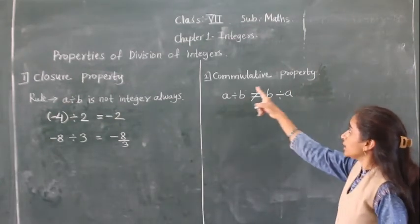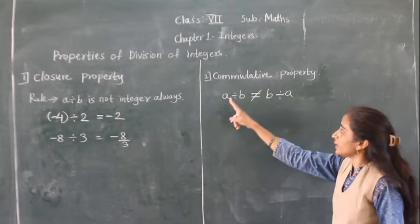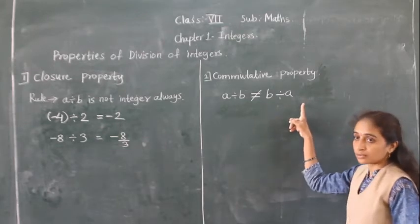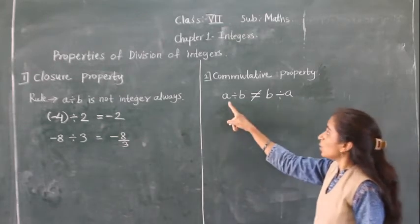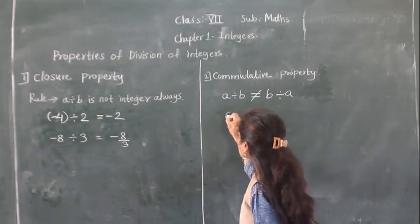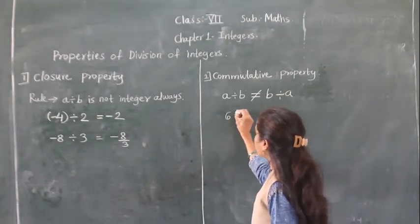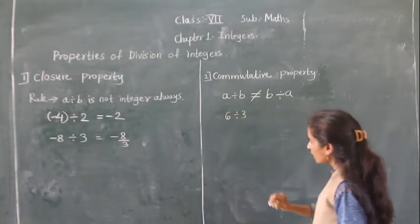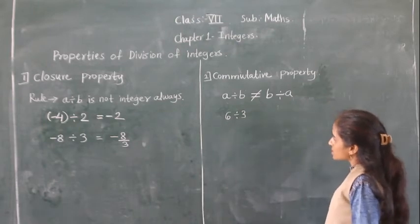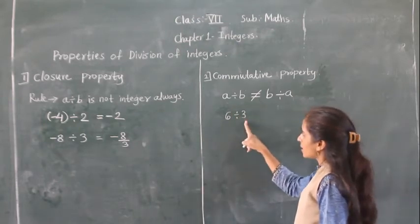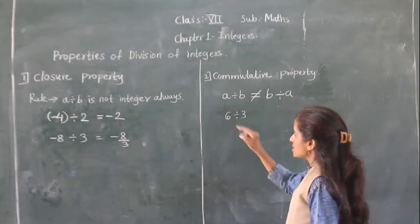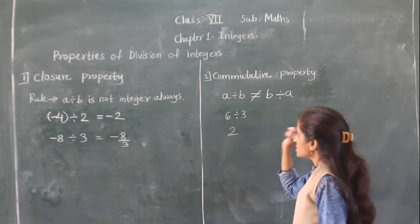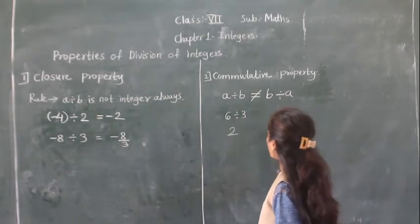The second property is the commutative property of division. A divided by B is not equal to B divided by A. Now suppose A is 6 and B is 3. So 6 divided by 3 — what is the answer? Let's see whether this property holds or not.